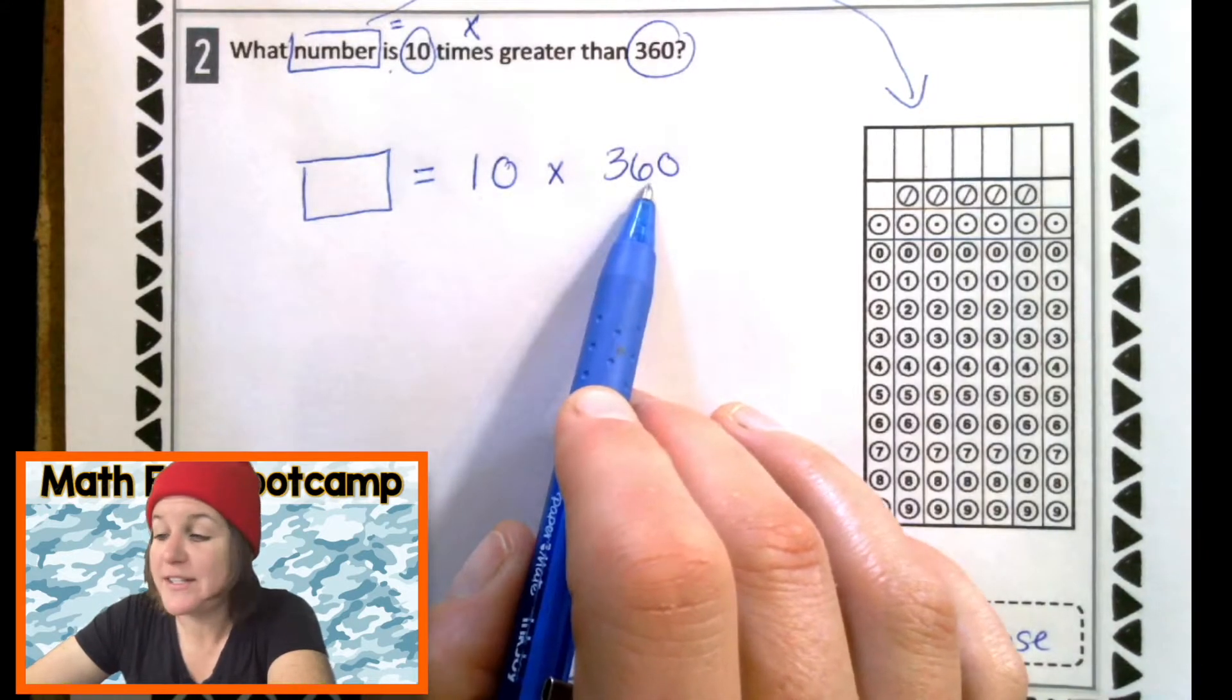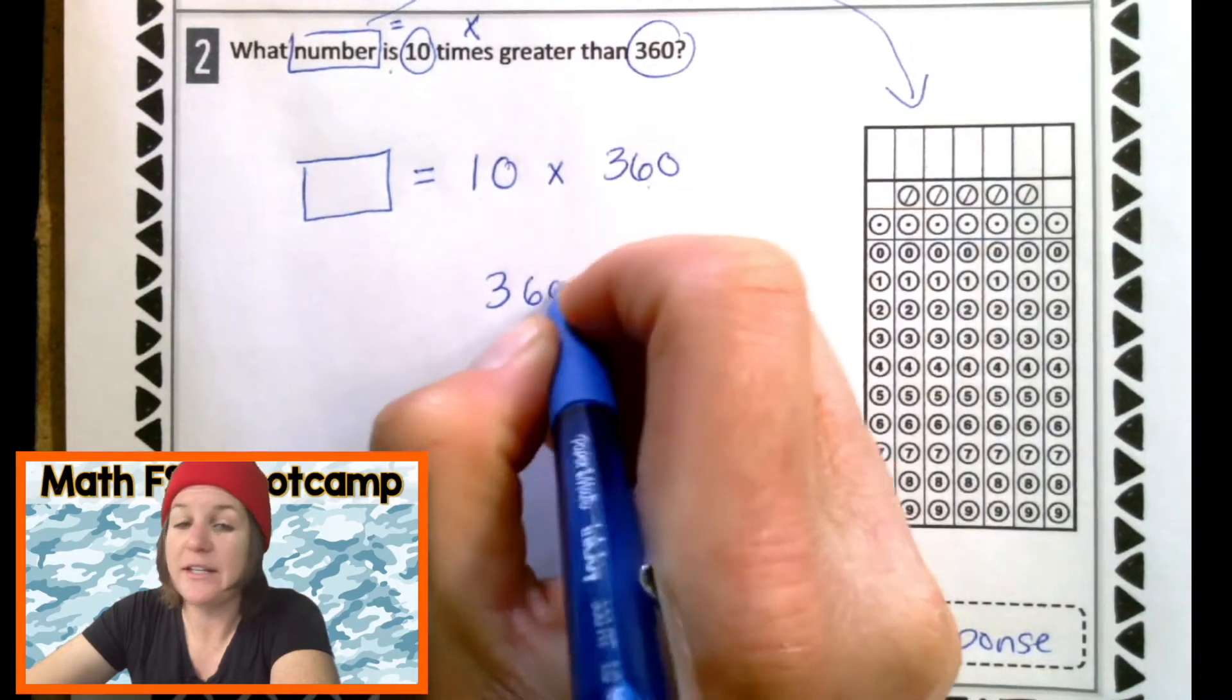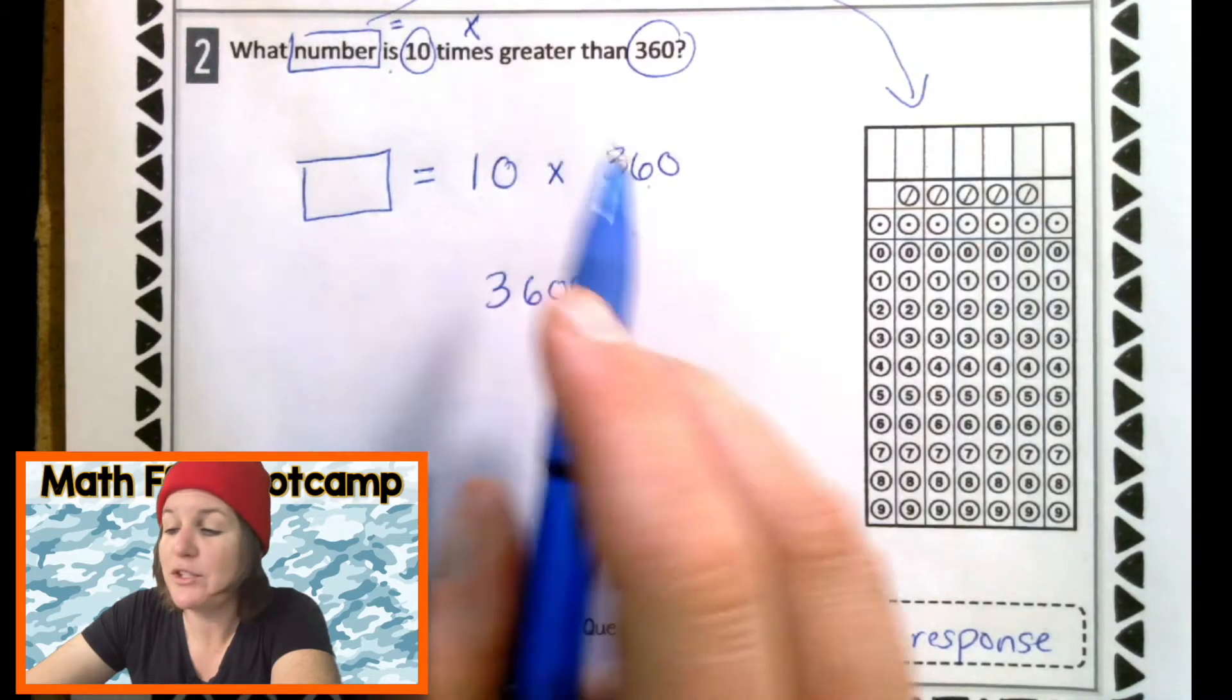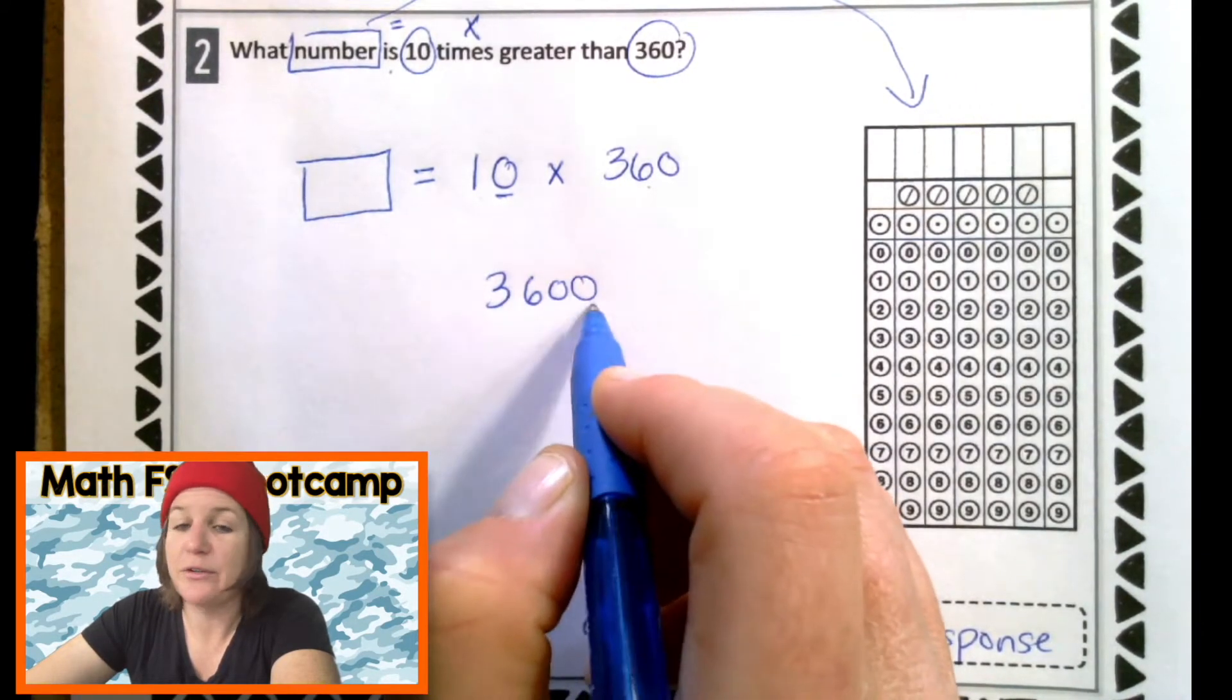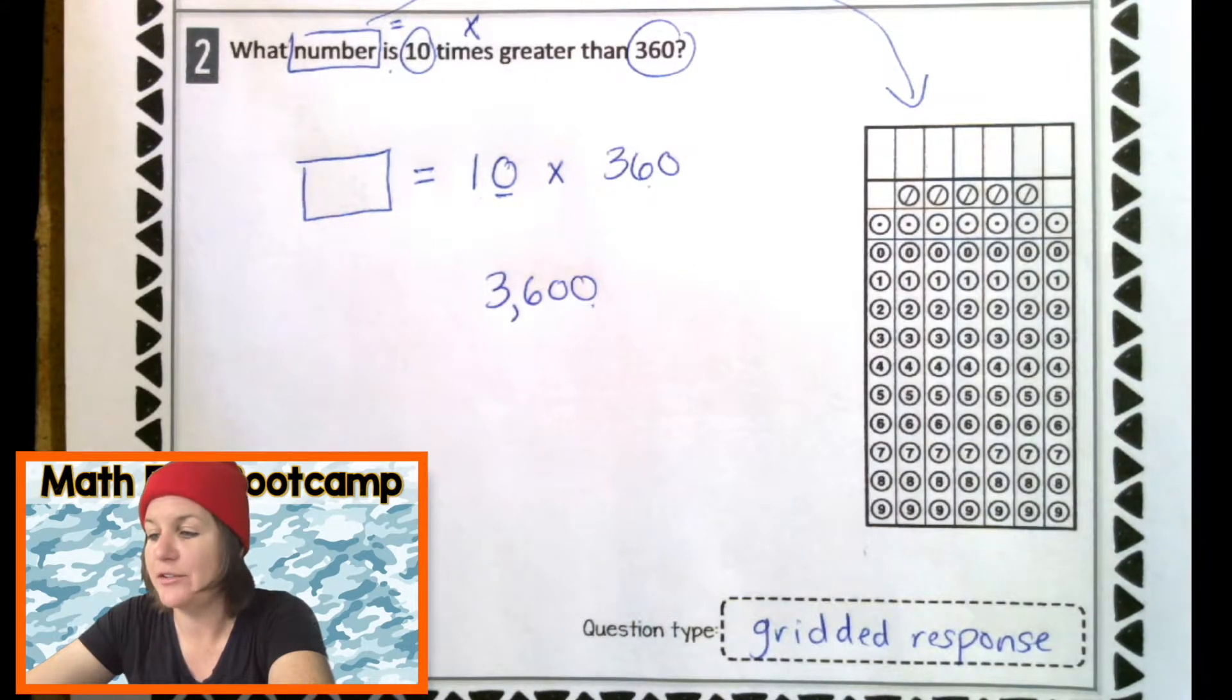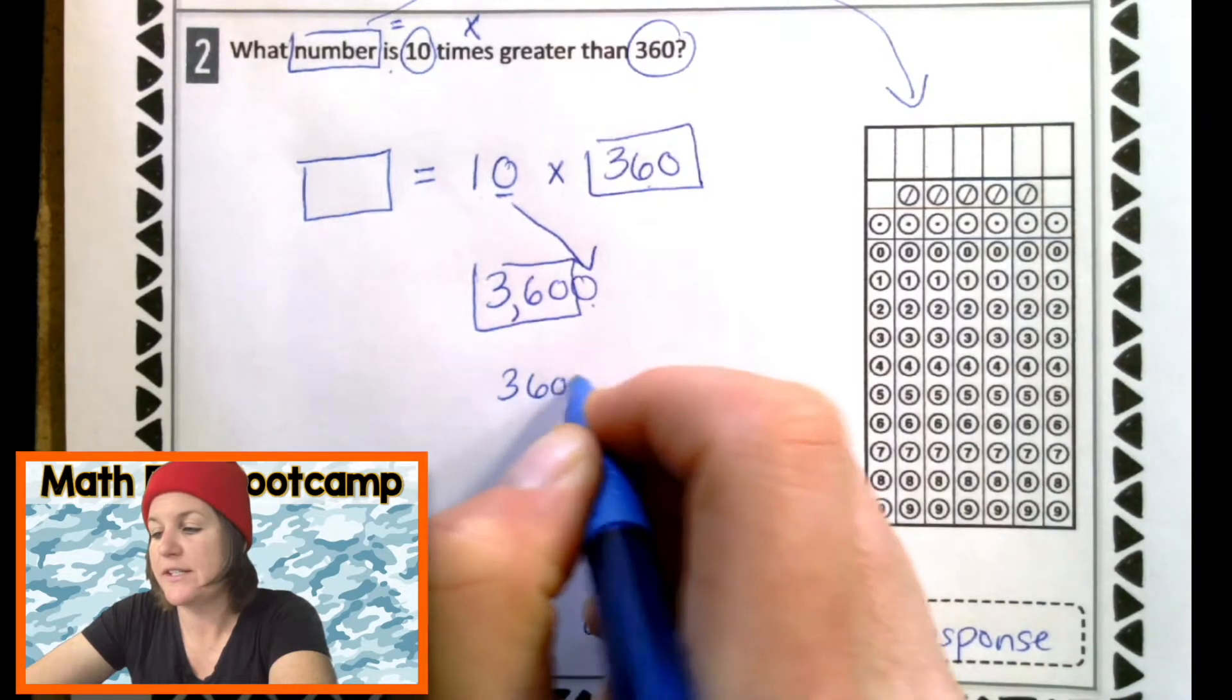10 times 360 would be 360 with another zero. Anytime we're multiplying by a multiple of 10, we just add that zero to the back of it. So that would be 3,600. See that? 3,600.